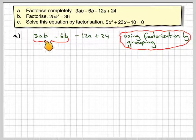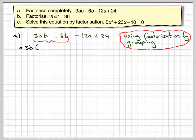So there's a 3 and there is a b. So we take out 3b and we're left here with just an a and here we're just left with a 2. Just check that, 3ab, 6b. That gives me about that.